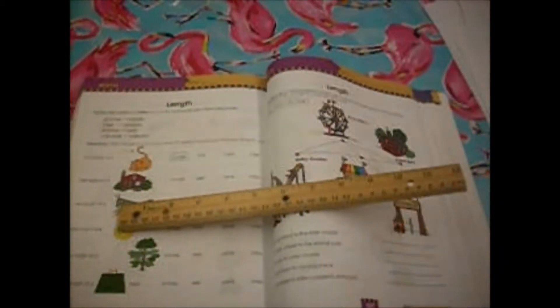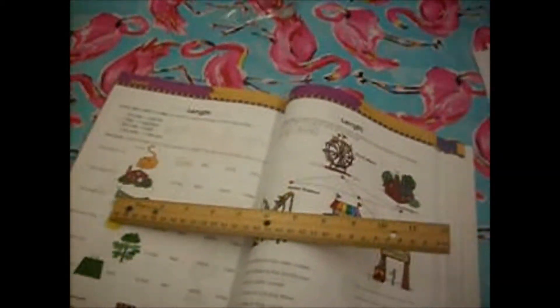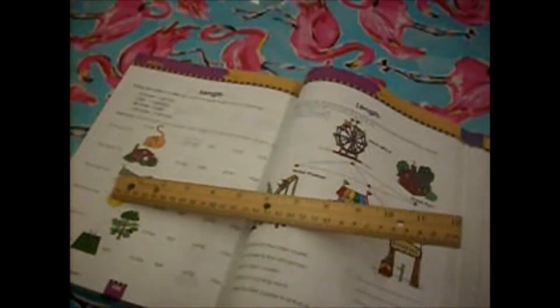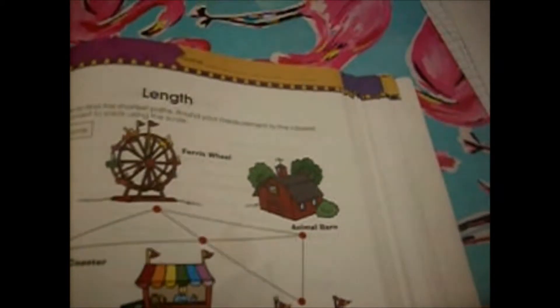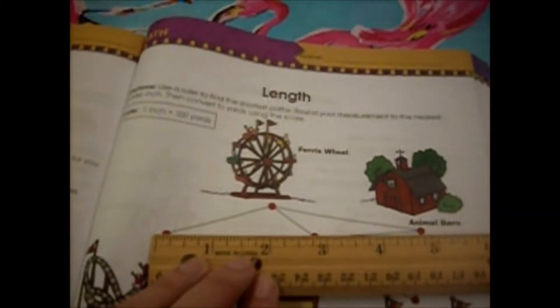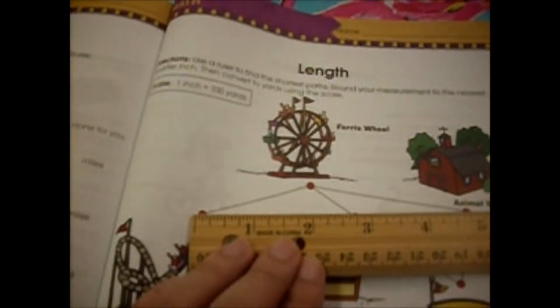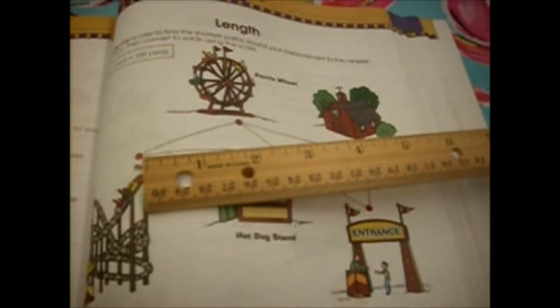Let me grab a ruler. I got my handy dandy ruler. I am going to use this throughout the whole video so we get the same measurement every time. Here we have a map of what looks like a carnival and we have to measure the hot dog stand to the roller coaster. These two dots at the end of your line - that's what you're measuring from. I'm going to do this backwards so I don't have to turn you guys upside down. It is about two and three-fourths inches.